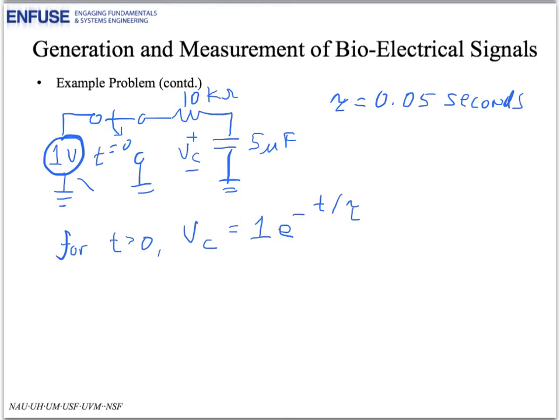And, from this circuit, we also know that V sub C plus V sub R, which is the voltage across the resistor, has to sum to 0 for time T greater than 0, which means that V sub R is just equal to minus V sub C.